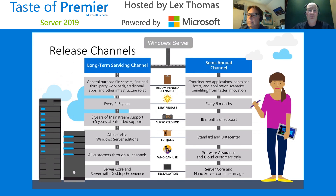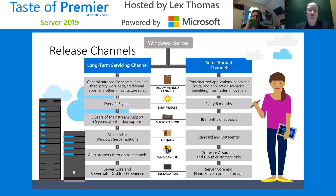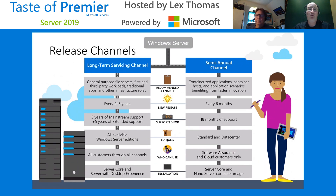When we're talking about the different release channels, this slide combines everything to keep in mind. Long-term servicing covers your traditional file server roles, Exchange, things like that, versus the semi-annual which is more containers and modern apps. Different support mechanisms: five years of mainstream and five years extended versus 18 months of support on the semi-annual channel. All versions of Windows Server are available in the long-term; we only have Standard and Datacenter available in the semi-annual. These are things to keep in mind when deciding which channel to follow for your organization.